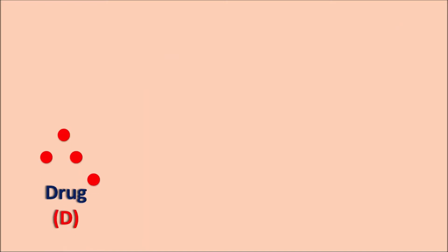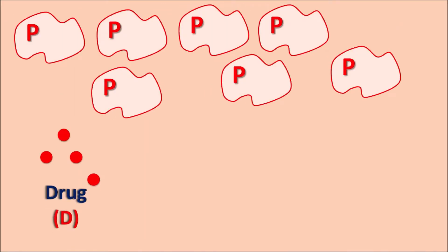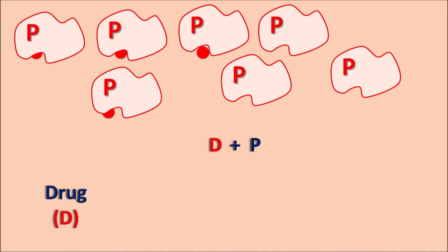Drug molecules within the systemic circulation can bind to the protein molecules. Suppose the drug molecules are going to bind to a protein; here you can observe few of the proteins are free and not bound with the drug. We can draw a kinetic equation for this protein-drug interaction. A drug interacts with the protein such that they form a protein-drug complex, and this rate of association can be given by the rate constant K. Similarly, the protein-drug complex can be dissociated to re-convert into a free drug as well as a free protein. Now the drug is available as a free form as well as bound form.